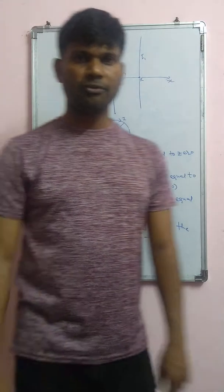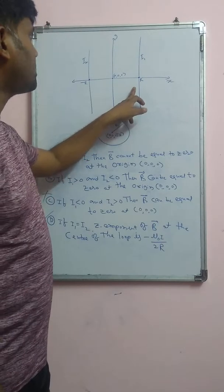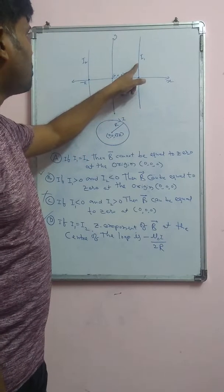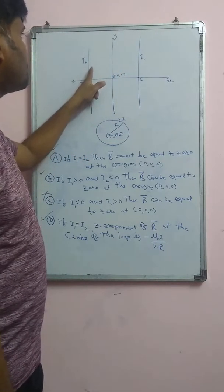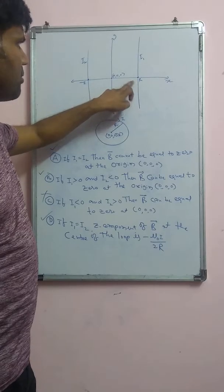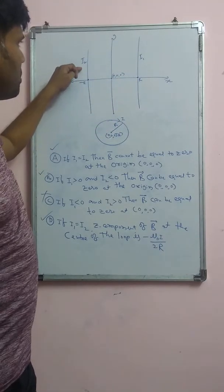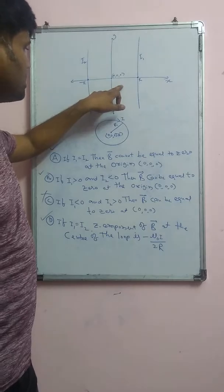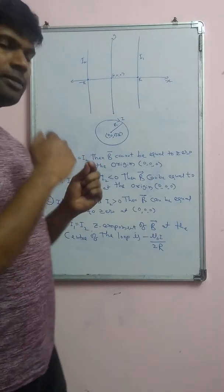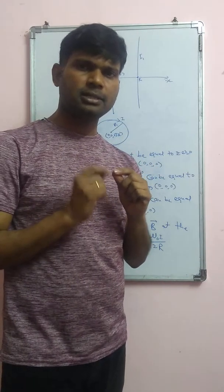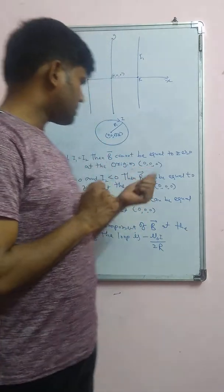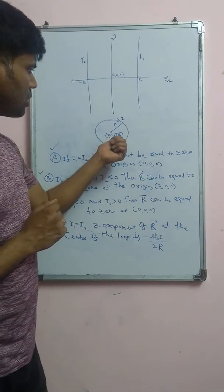This is problem number 5, paper 1, Z Advanced 2018 in physics. The problem gives 2 infinite length current-carrying conductors. Conductor 1 and conductor 2 are in the xy plane, where wire 1 is at a distance of r from the origin and wire 2 is at a distance of minus r from the origin. Another circular loop of radius r is given at position (0, 0, √3r).